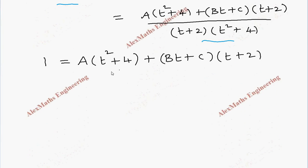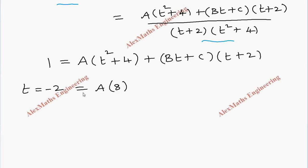Now we take values of t to find A, B, and C. Let us substitute t equals minus 2. Then A times (minus 2 squared plus 4) gives A times 8, and the other term becomes 0. So 1 equals 8A, which means the value of A is 1 by 8.